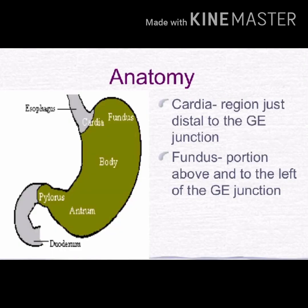The first region is cardia. The cardia is where the bulging of the stomach starts and it connects to the esophagus — the starting region between the esophagus and stomach is the cardia. The fundus is the portion above and to the left of the gastroesophageal junction.